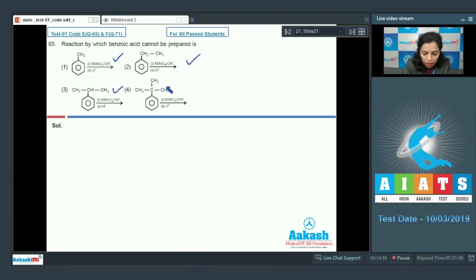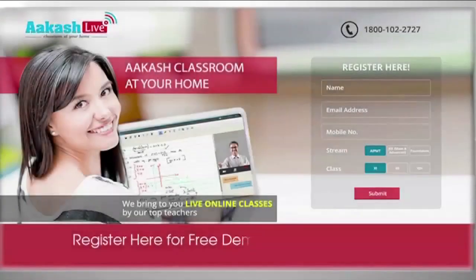Then we have the fourth option. If you look at this group that's present over this benzene ring, in this case there is no oxidation will take place. No formation of benzoic acid in this case. So fourth option, just choose that as your correct answer.